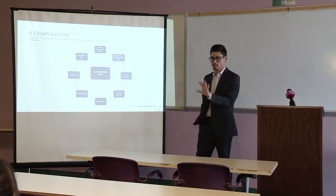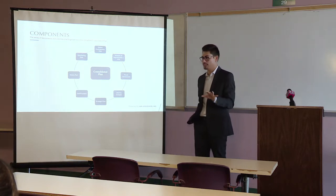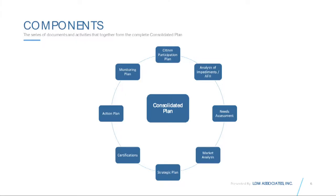The next component is the analysis of impediments, or AFI. This section covers impediments to fair housing choice, and we'll discuss what is meant by fair housing and what an impediment to fair housing would be.